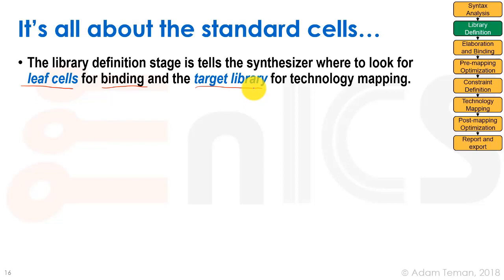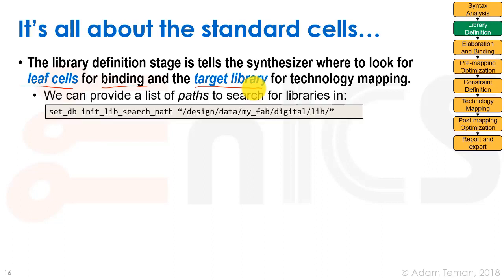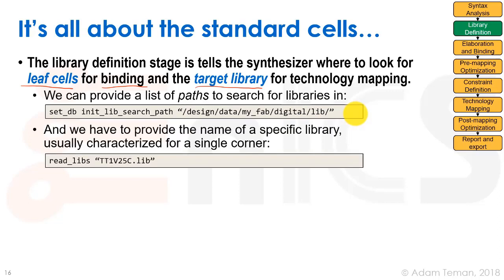The target library is basically a set of all the hard macros we have. To set this up, we can first define a path to search for our libraries. In Cadence Genus with the common UI, we use the setdb command, which sets attributes on our database. One attribute is init_lib_search_path, which specifies where to look for .lib files — files that describe the timing of our standard cells and hard macros for use by the synthesizer. We can specify a list of many different paths.